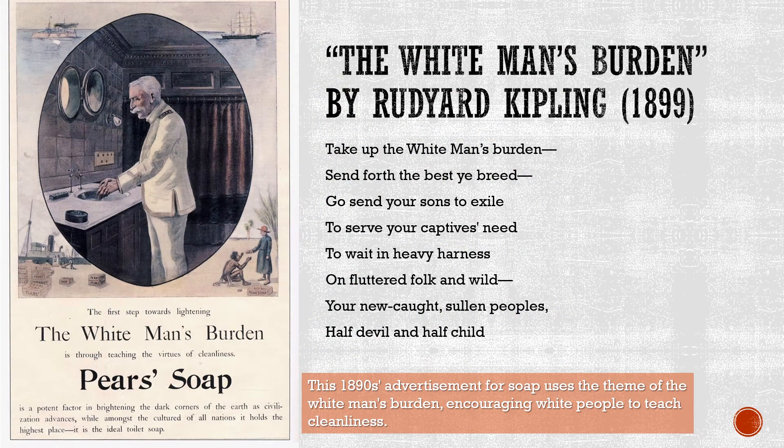This is the poem by Rudyard Kipling, The White Man's Burden: 'Take up the white man's burden, send forth the best ye breed. Go send your sons to exile, to serve your captive's need, to wait in heavy harness, on fluttered folk and wild, your new-caught sullen peoples, half devil and half child.' This was an incredibly demeaning way of looking at the rest of the world, and it reinforced the idea that white people had a responsibility to look after the rest of the world because they were more superior — a belief very widely held amongst the intellectual class in the 19th century.